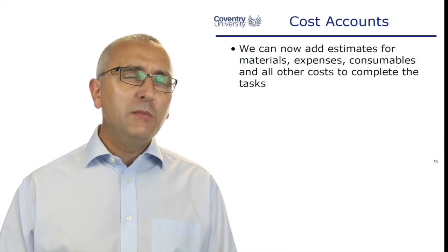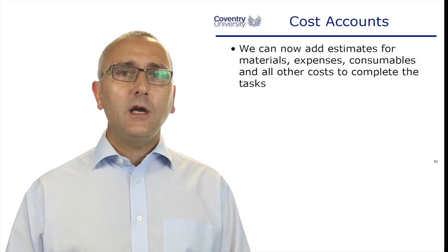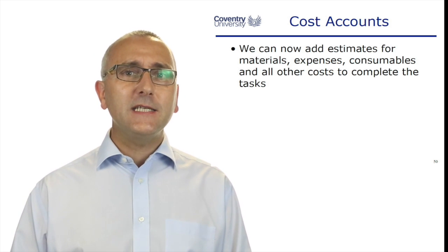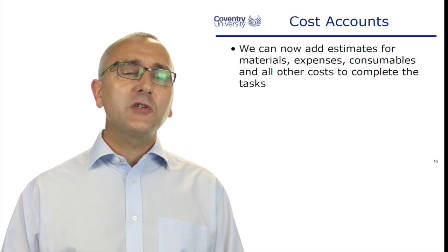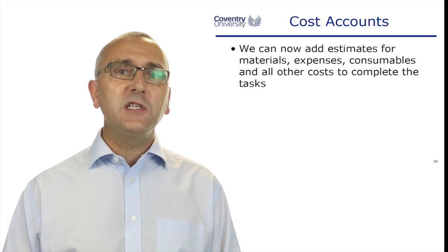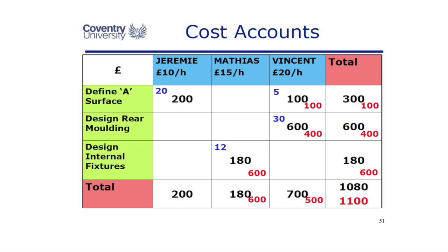We can now add other estimates for materials, equipment, hire, rental, expenses, and other costs associated with delivering these tasks. For instance, there's £100 associated with defining the A surface — it could be buying materials or buying time on a coordinate measuring machine. Design rear moulding: £400. Prototypes: prototype costs.